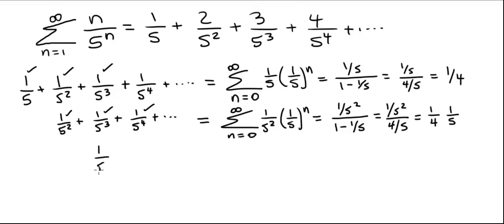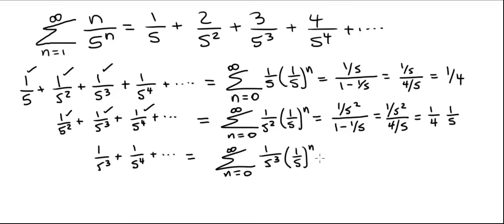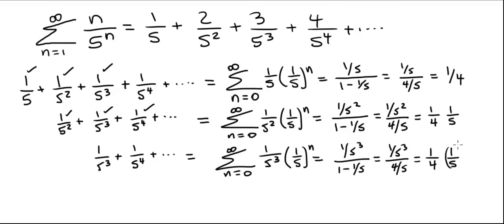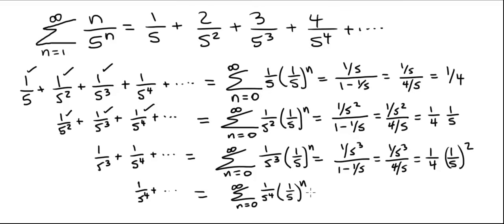The next series starts at 1 over 5 to the 3rd plus 1 over 5 to the 4th and so on. This is also a geometric series in standard form: summation from 0 to infinity of 1 over 5 cubed times 1/5 to the n. It converges to 1 over 5 cubed divided by 1 minus 1/5, which is 1 over 5 cubed divided by 4 over 5, giving 1 over 4 times 1/5 squared. The next series starts at 1 over 5 to the 4th, written as summation from 0 to infinity of 1 over 5 to the 4th times 1/5 to the n, and by the same pattern converges to 1 over 4 times 1/5 cubed.